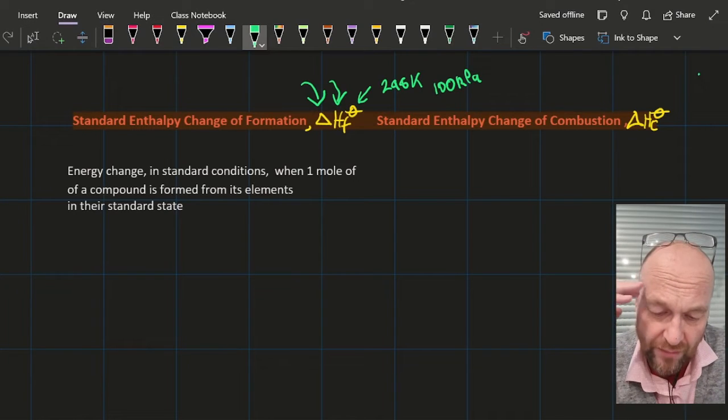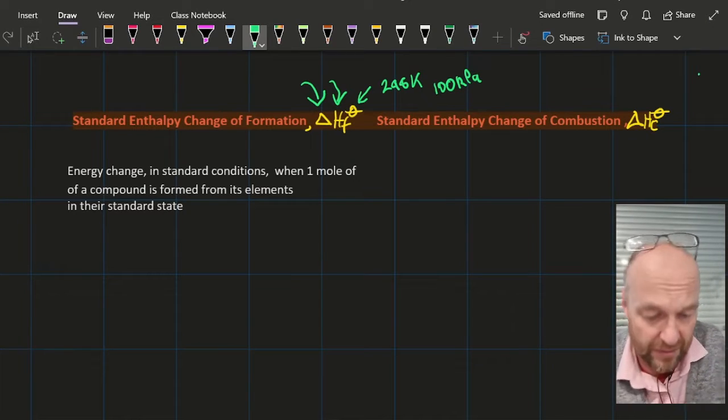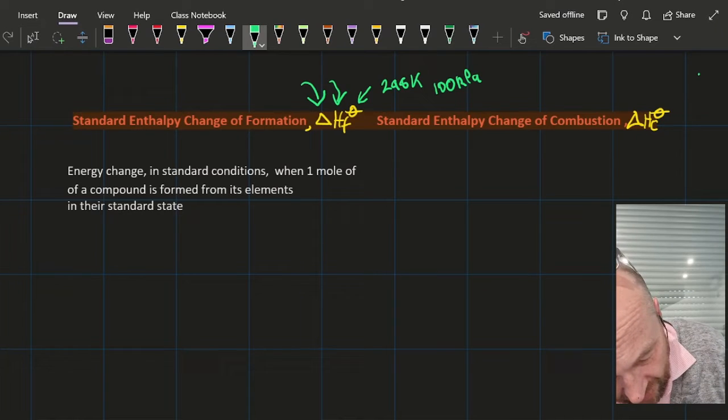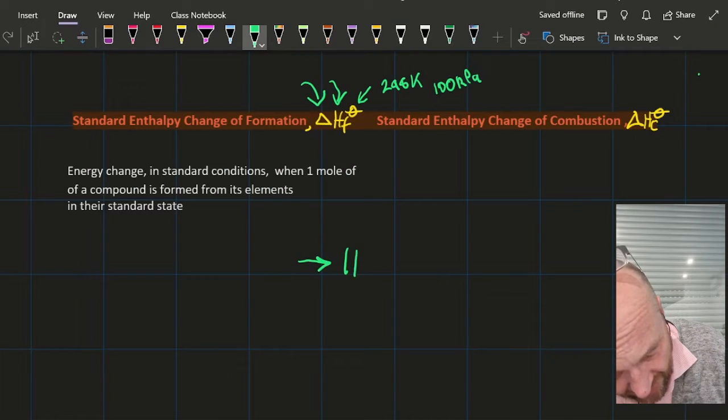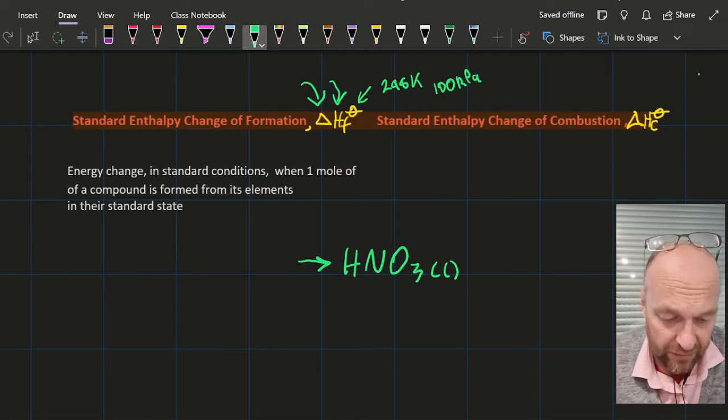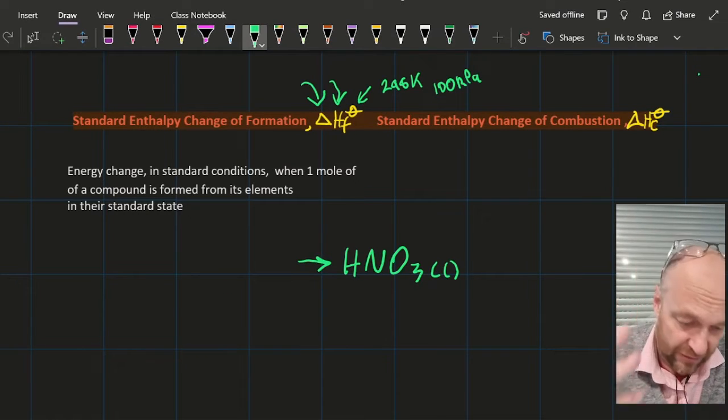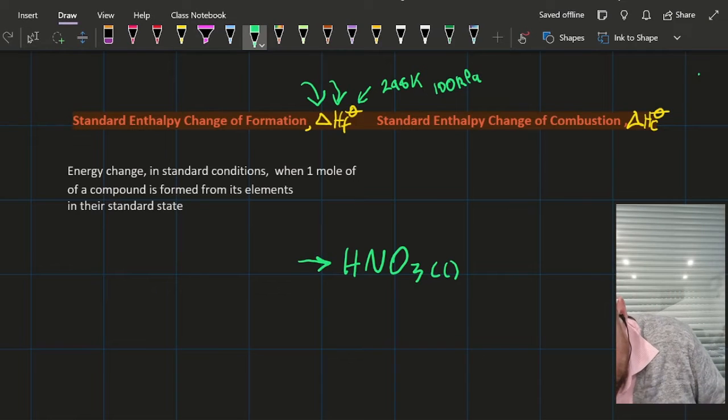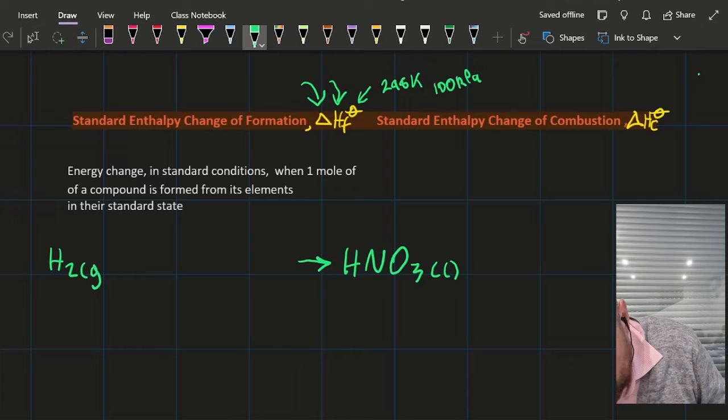The definition: energy change in standard conditions when one mole of a compound is formed from its elements in their standard state. The IB favorite one here is nitric acid. It's a liquid—don't put aq because then that will be two things: water and nitric acid. I know that the standard state of hydrogen is H2 and it's a gas. Don't forget the state symbol or you'll lose a point.